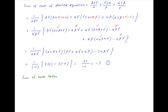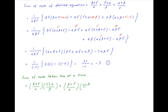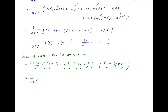Now, the sum of the roots of the desired equation taken two at a time equals (beta + gamma)/alpha · (gamma + alpha)/beta + (beta + gamma)/alpha · (alpha + beta)/gamma + (gamma + alpha)/beta · (alpha + beta)/gamma. Taking a common denominator of alpha·beta·gamma, the numerator is gamma·(gamma + beta)·(gamma + alpha) + beta·(beta + gamma)·(beta + alpha) + alpha·(gamma + alpha)·(alpha + beta).